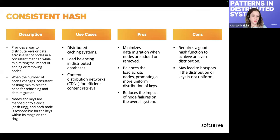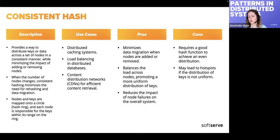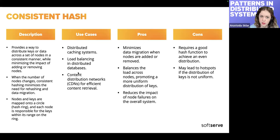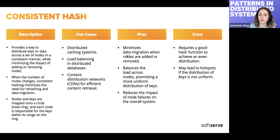Consistent hashing is an algorithm that provides a way to distribute data to services while minimizing the impact of adding or removing nodes. It doesn't distribute data as evenly as modulo hashing, but if we add or remove nodes frequently we should use it to minimize rehashing and data migration. The basic idea is to map data on a ring where each node is responsible for keys in its range. Cassandra uses this for data partitioning, and it's also used in distributed caching, load balancing, and CDNs.